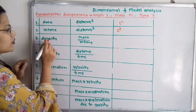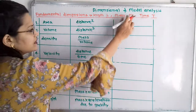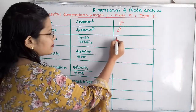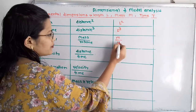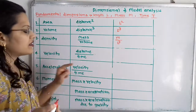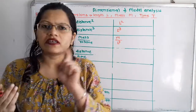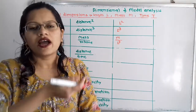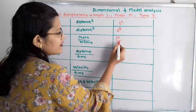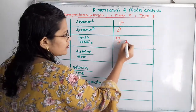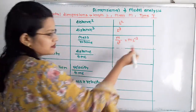Then density. Density is mass by volume. For mass it is capital M and for volume it is L cubed. So I will shift L cubed to the numerator — it will become M into L raised to minus 3.